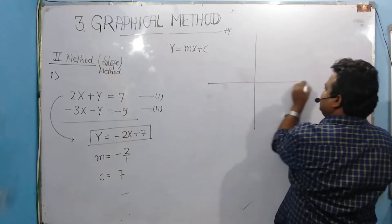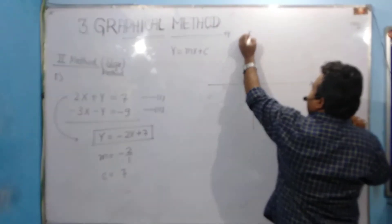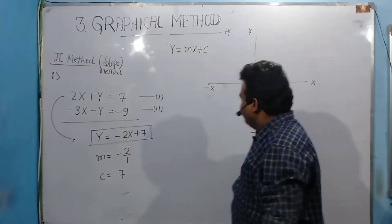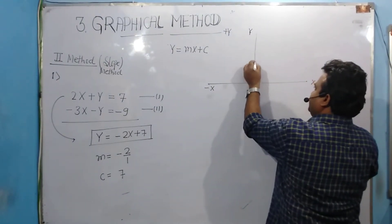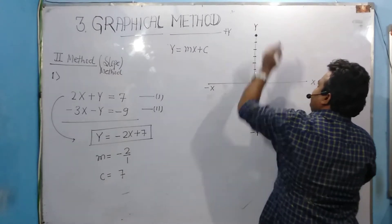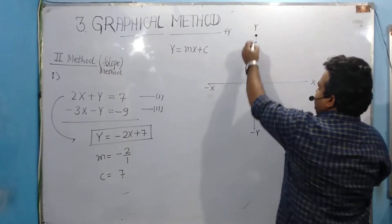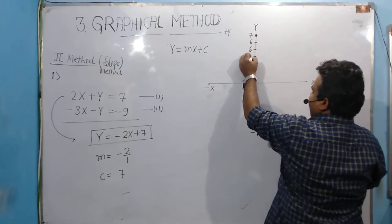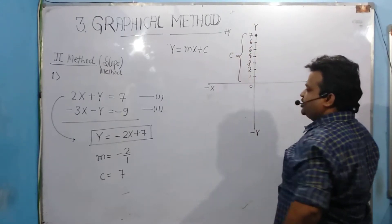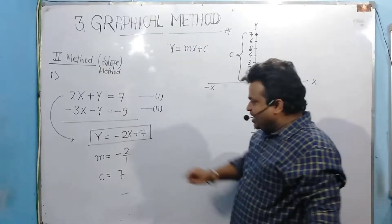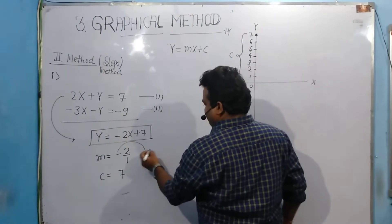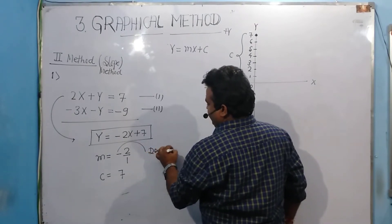Now I am going to plot the graph. I start drawing with the point c = 7. On the graph, I count 1, 2, 3, 4, 5, 6, 7 — this is the point from where my straight line must pass. This is my c value, which is 7. Now for the slope method: the negative sign means downward motion.